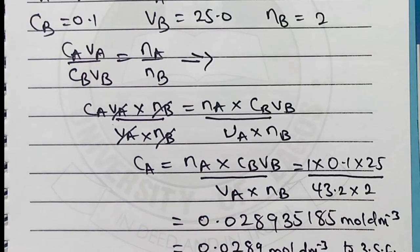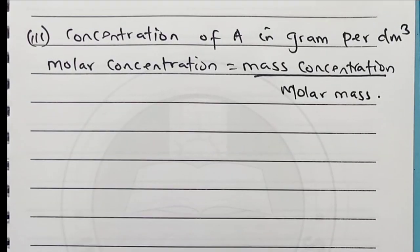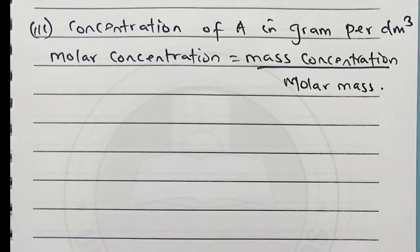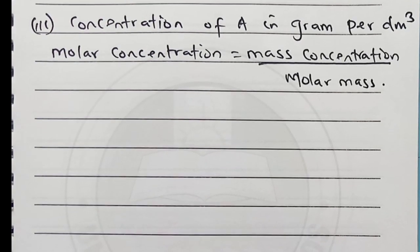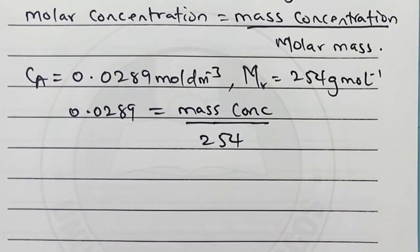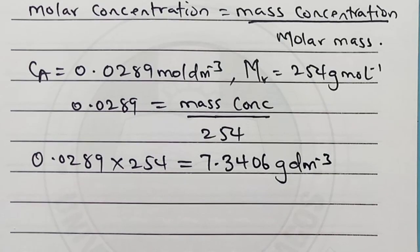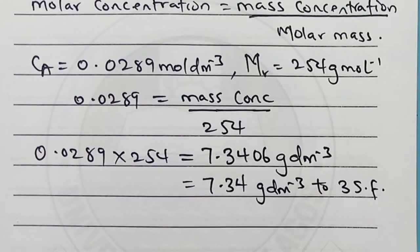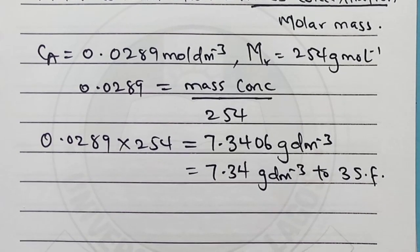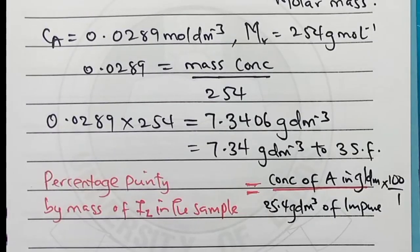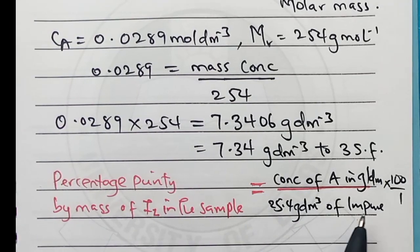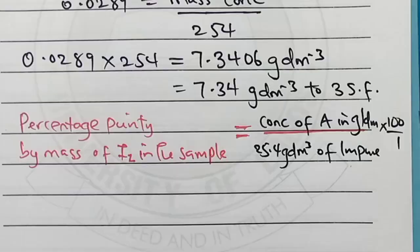Let's go for concentration of A in g/dm³. We know CA is 0.0289 and the molecular mass is 254. Making mass concentration the subject, we get 7.34 g/dm³. This is the concentration of the pure sample of iodine. For percentage purity, we have 7.34 g/dm³ times 100 divided by 25.4 g/dm³, giving us 28.9% pure.